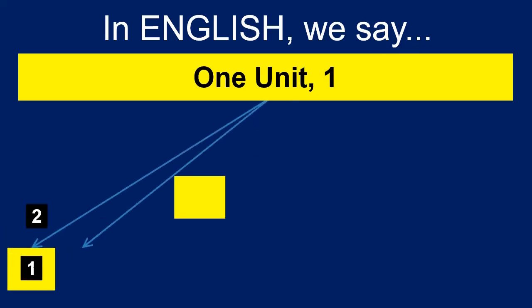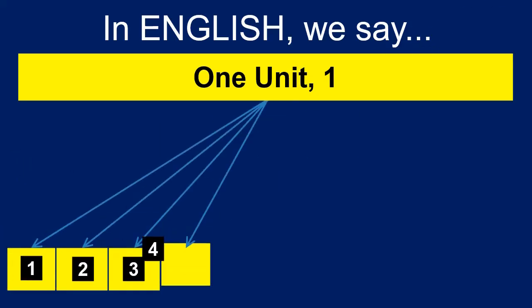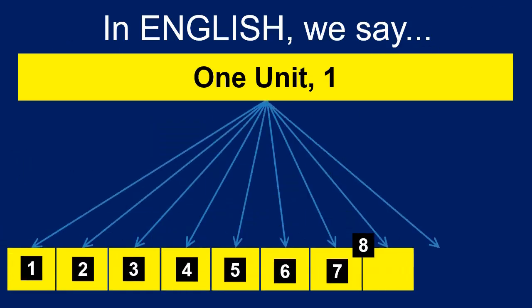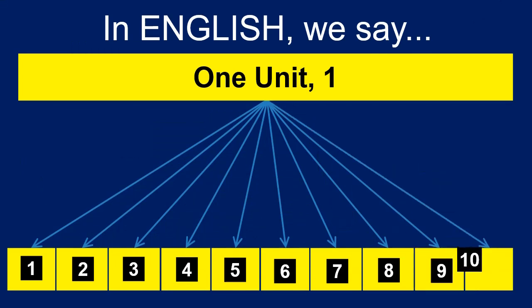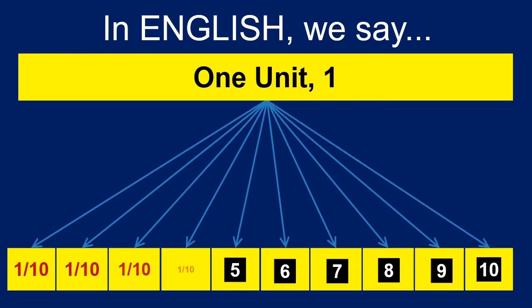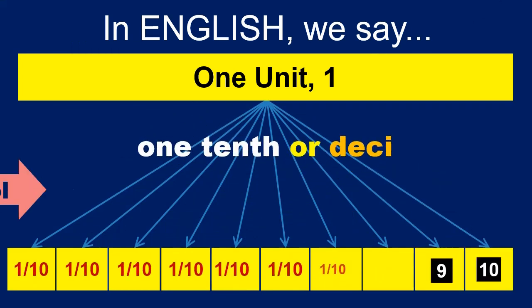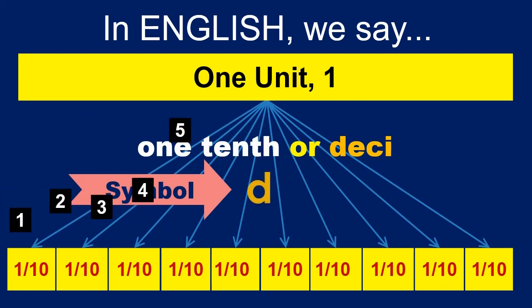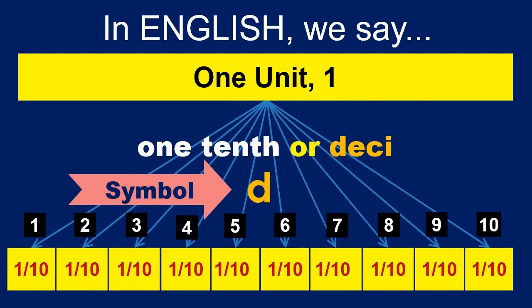The same analysis can be applied to any number. When one unit is divided into ten equal units, after division, each one is called as one tenth or deci, represented with a small letter d. There are ten such equal quantities.